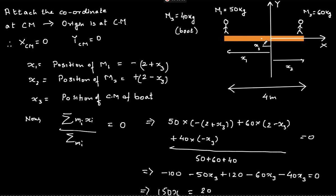The underlying concept in this question is center of mass. If there is no external force acting on the system, the center of mass stays at the same point. Considering M1, M2, and the boat M3 as a system, there is no external horizontal force, since there is no friction between the boat and the water surface. So there is no horizontal external force, and the center of mass will stay wherever it is.